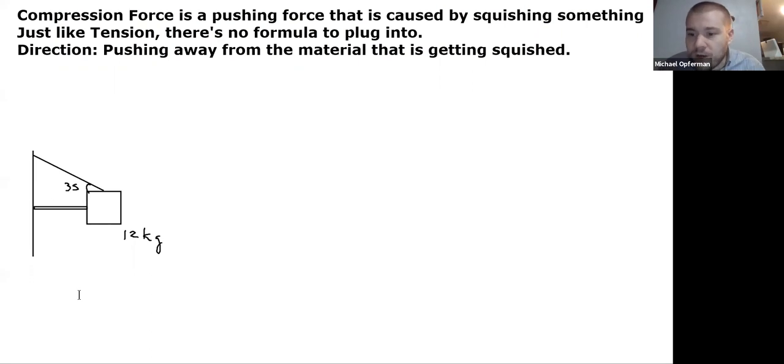So we would say the rope on top is in tension and the rod on the left is in compression. So what is the value of the tension force and what is the value of the compression force in order to hold this 12 kilogram block in place using these forces? Let's do it.